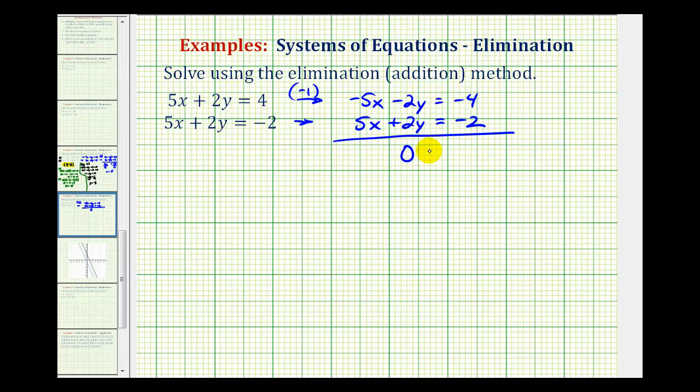We're left with zero equals negative six. When we solve a system algebraically by the elimination method or substitution method and the variables are eliminated, this means the system will have either no solution or an infinite number of solutions.